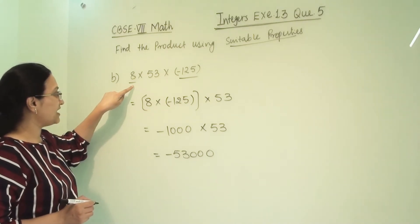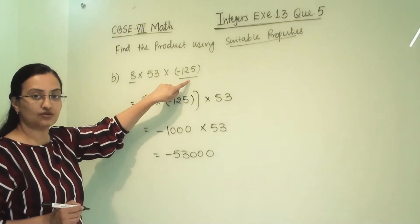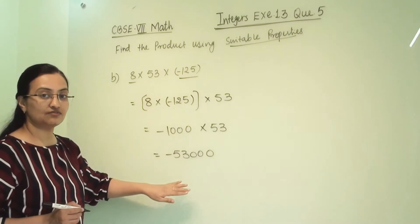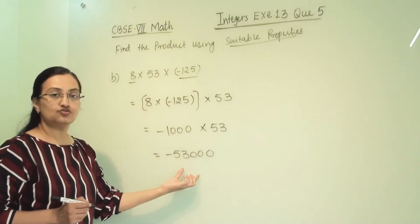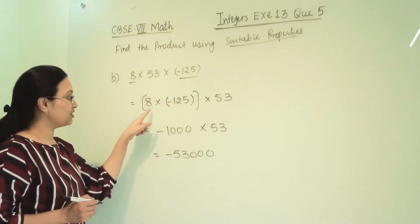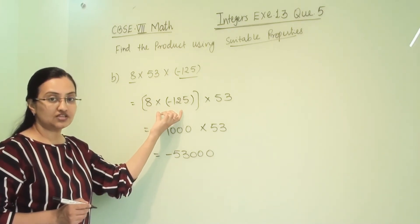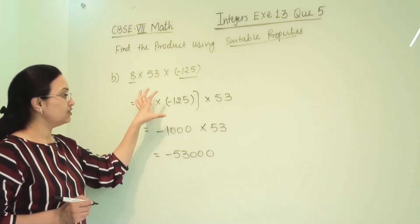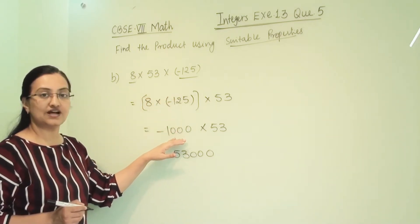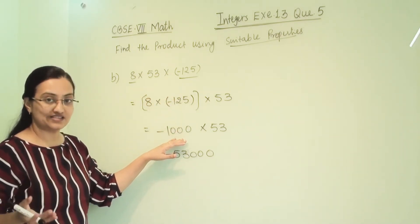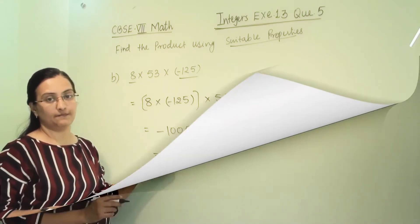If we multiply 8 × 53 × 125, the answer remains the same. According to the associative property of integers, we club two numbers together that give an answer in tens, making it easier to multiply the remaining number.